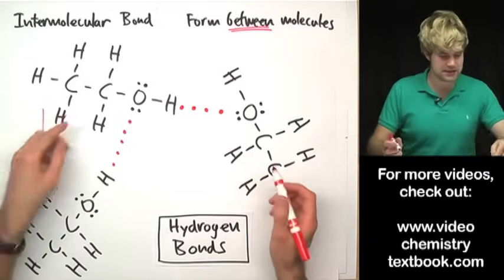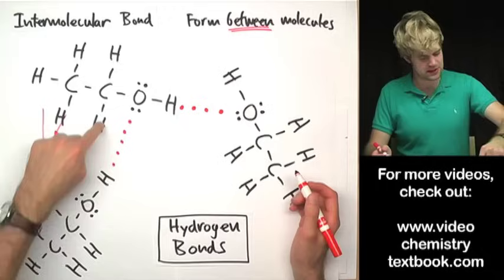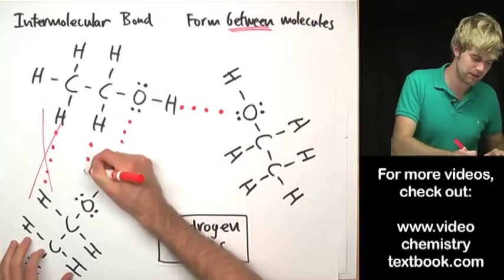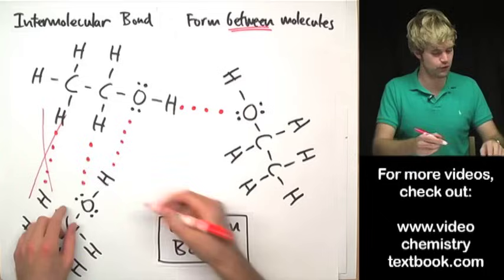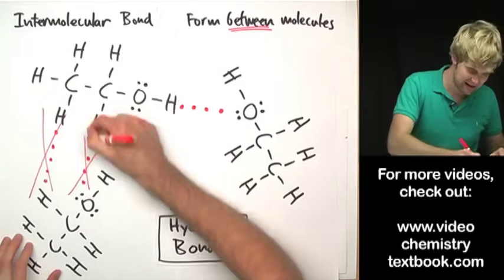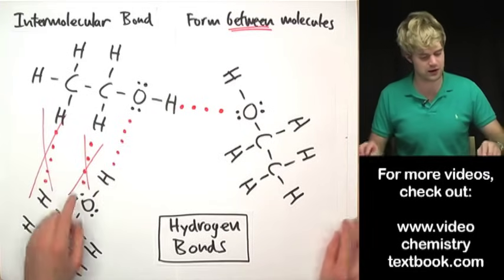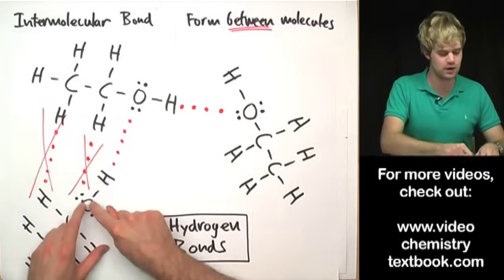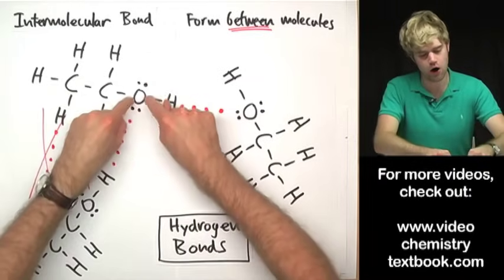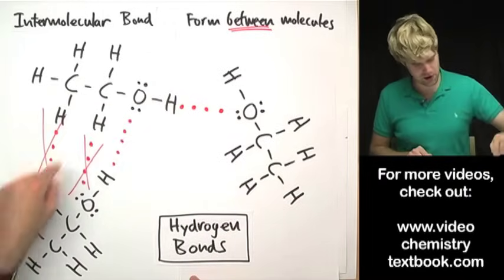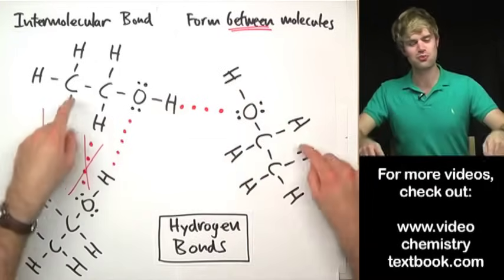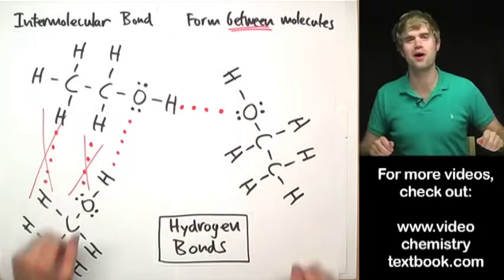Another mistake is taking an H connected to a C and connecting it with an O. That's only half right — O's can participate in hydrogen bonds, but if the H is connected to a C, it cannot form a hydrogen bond. It's got to be an H connected to an O making a bond with an O on another molecule. These incorrect combinations are wrong, but the hydrogen bonds between the molecules shown — that's the way to go.